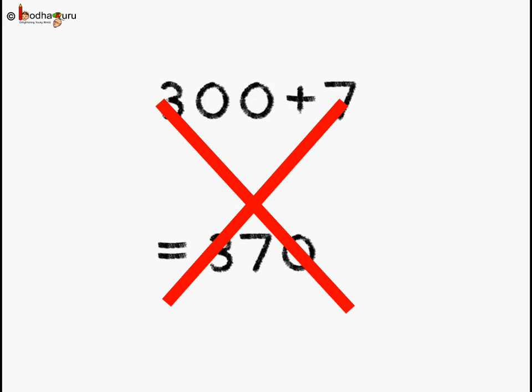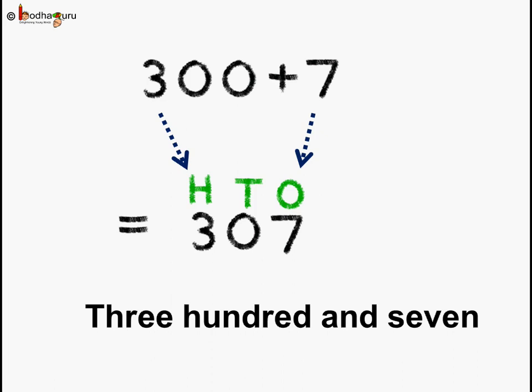So what should we do? We should do it systematically starting from the ones place. How many ones are there? 7 ones. How many tens are there? There are no tens. So put a 0 here. And how many hundreds are there? 3 hundreds. So what do we get? We get the answer as 307. Not 370. It is 307. Understood?